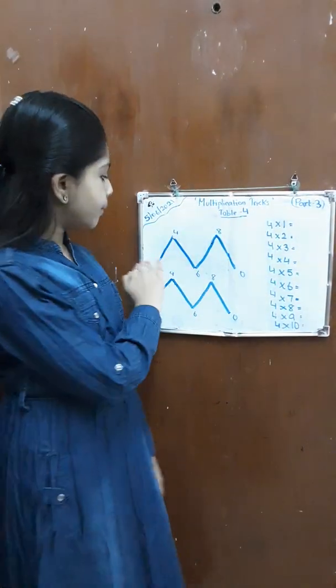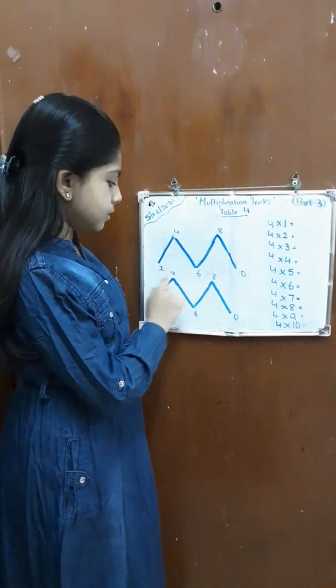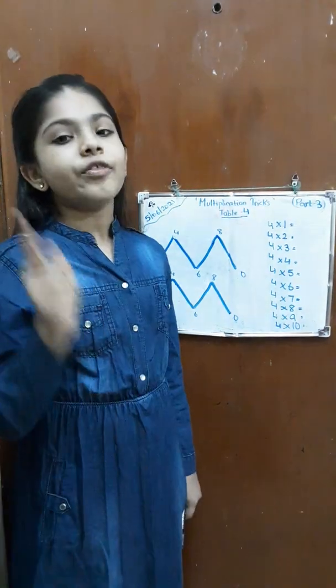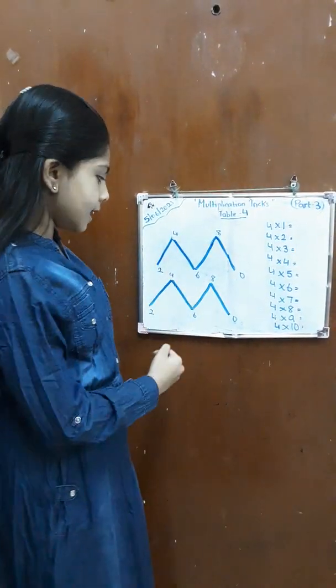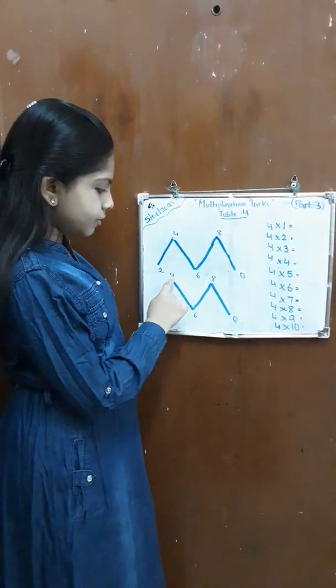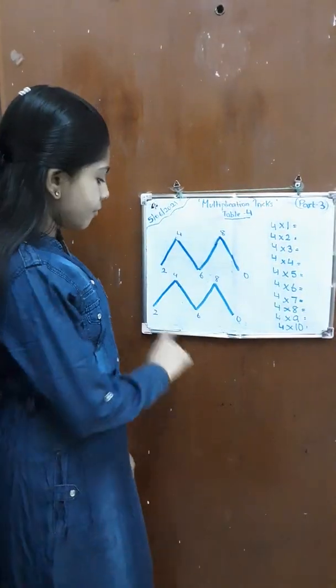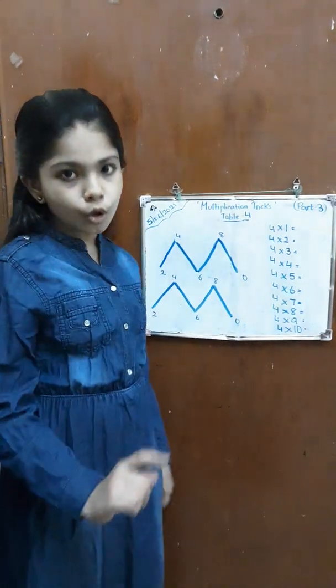And the bottom row will be three numbers, 2, 6 and 0. That will be the bottom row of the first M. Now on the second M, the pointed ones will be the top row of the second M and this will be the bottom row of the second M.